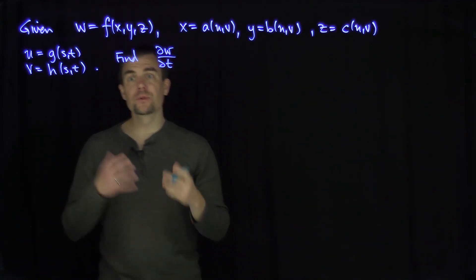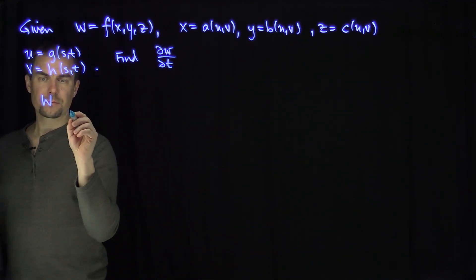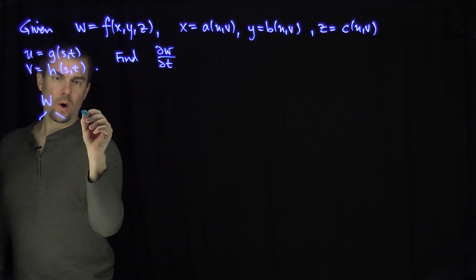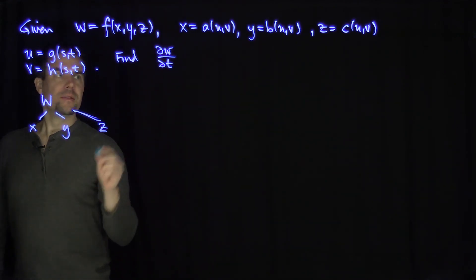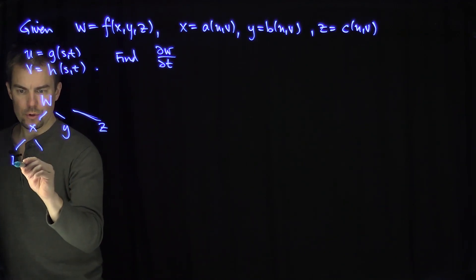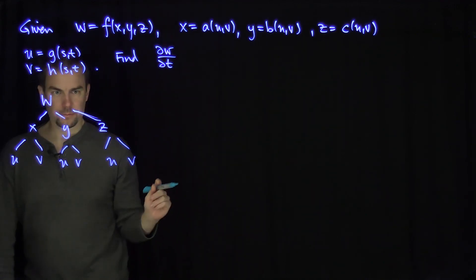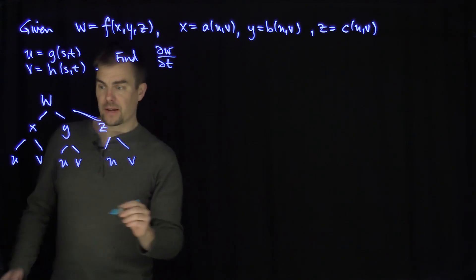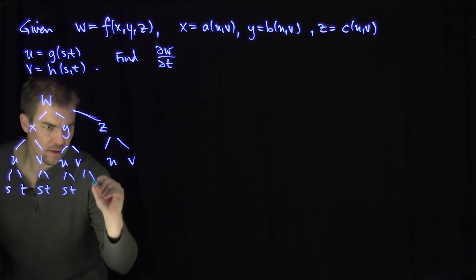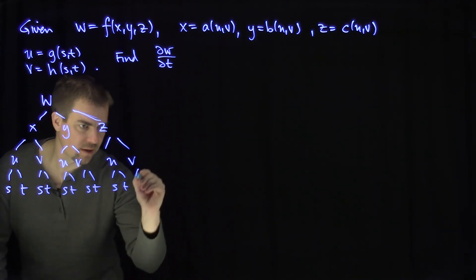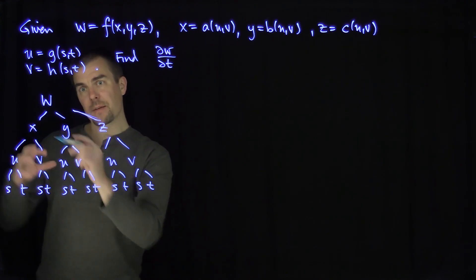Now there's a lot to unpack here, so this is where tree diagrams come in handy. We're going to look at this tree diagram: w depends on x, y, and z. Now x is going to depend on u and v, y is going to depend on u and v, and z will depend on u and v. And then u and v themselves depend on s and t. So we see there's lots of dependence — lots of ways that w depends on t based on the branches of this tree.